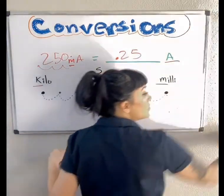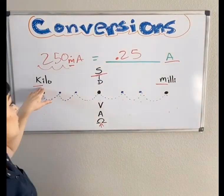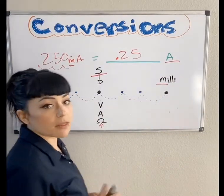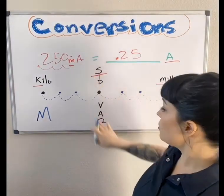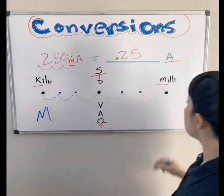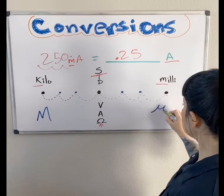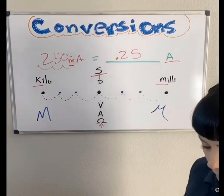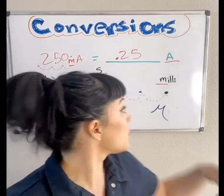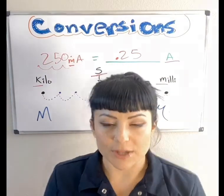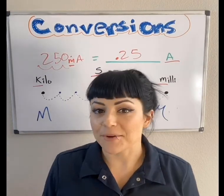On your meter, kilo is shown as a capital K, and milli is a little lowercase m in front of the number. If it were mega, you'd see a big capital M in front of whatever unit — volts, amps, or ohms. Micro is a special symbol that looks almost like a cursive U with one side having a longer tail. Your meter will display that symbol rather than a lowercase m so you don't get confused which is which.